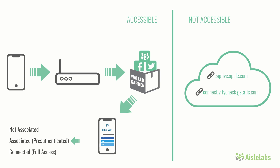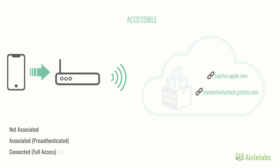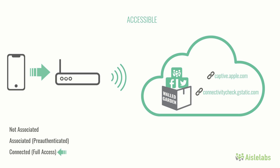Once the splash page requirements are fulfilled by logging in via a social network, email address, or phone number, the splash page indicates to the AP that the user is authorized to proceed. The AP confirms this through the RADIUS protocol. Once confirmed, the AP grants access out of the walled garden and onto the World Wide Web. When authentication completes, no traffic passes through iLabs. All traffic goes directly from phone to AP to the internet.